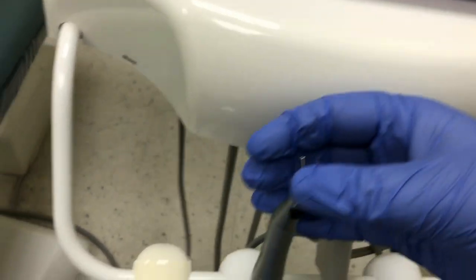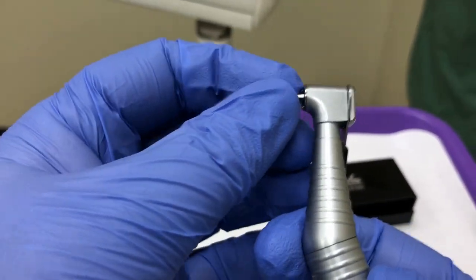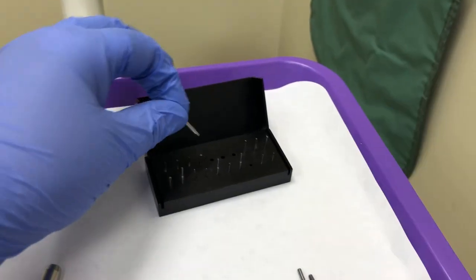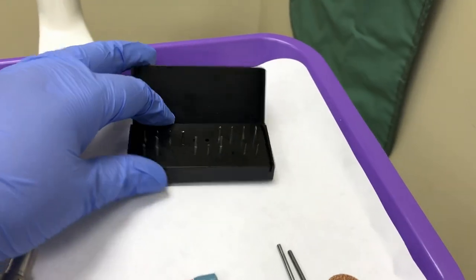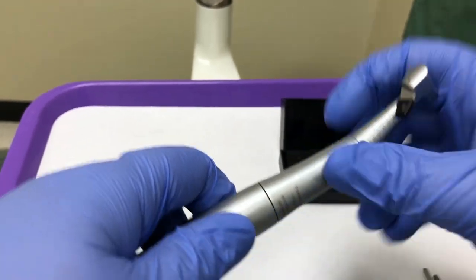To disassemble this handpiece, swing the latch lock open and remove the burr. Place the burr back into the burr block. After patient treatment, the entire burr block is taken to sterilization. To remove your contra angle, simply pull the two pieces apart.